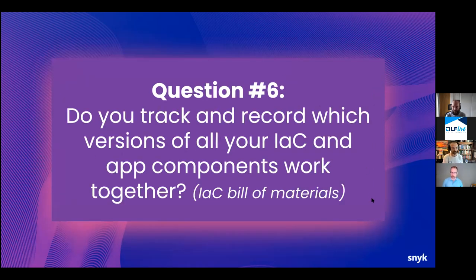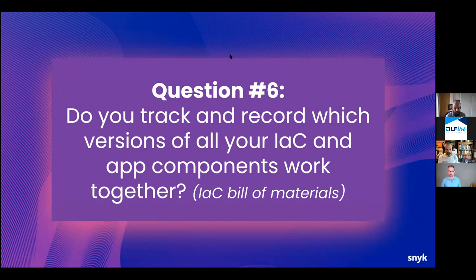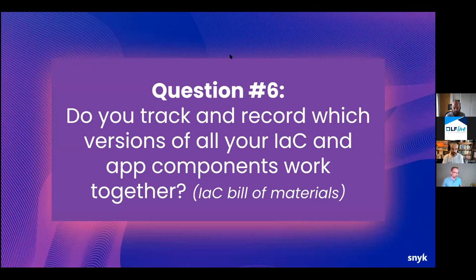Do you track and record which versions of your IaC and all the other components were part of something that worked together — are you creating that IaC bill of materials? You might be doing this manually, running it through tests with a script you've written, or using tools that can dynamically generate all of this for you. Having a record of things that have been tested together and known to work together is good for a lot of reasons.